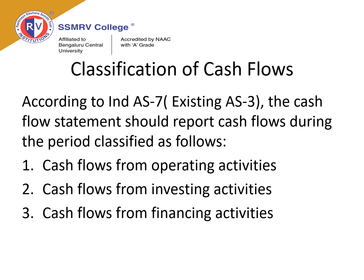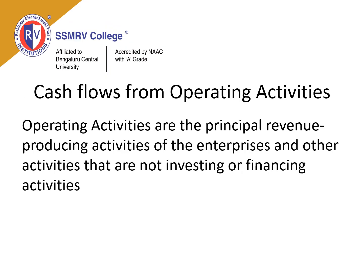According to Indian Accounting Standard 7 (previously Accounting Standard 3), the cash flow statement should report cash flows during the period classified as: cash flows from operating activities, cash flows from investing activities, and cash flows from financing activities. Operating activities are the principal revenue-producing activities of the enterprise and other activities that are not investing or financing activities. The amount of cash flows arising from operating activities is a key indicator of the extent to which the operations of the enterprise have generated sufficient cash flows to maintain operating capability, pay dividends, repay loans, and make new investments without recourse to external sources of financing.